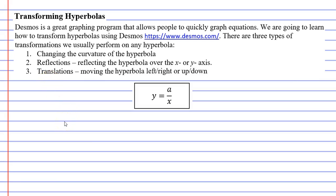Translations involve moving the graph left, right, up or down. The transformations we are looking at in this video are based on the basic reciprocal function y equals a over x. Some of the properties taught in this video will not apply to more complex reciprocal functions, but you don't need to worry about that since the standard mathematics course does not delve into complex functions.